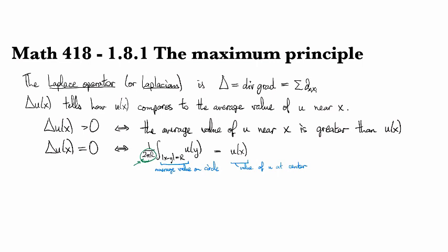Since it holds for every circle, it'll also hold for the disk. So u of x will be equal to the average value of u on the entire disk centered at this point x. In higher dimensions, you can look at the average over the ball instead of the sphere in the same way.